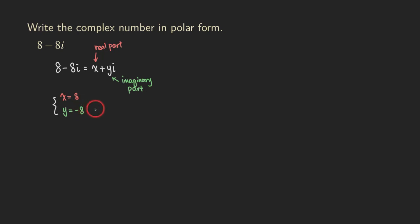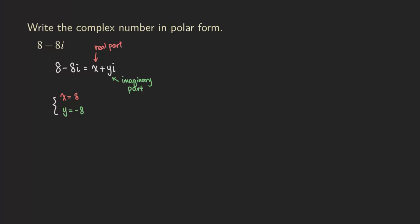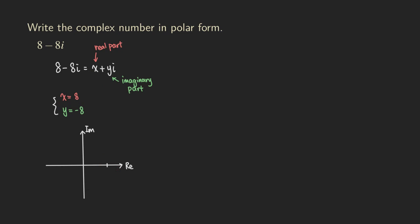So we have those two numbers. We can actually plot this point on the complex plane — it's not always necessary, but it can make later calculations more convenient. The vertical axis is the imaginary axis and the horizontal axis is the real axis. With x equals 8, you go 8 units in the positive real direction, and with y equals negative 8, you go down to negative 8. So the point is located right here.